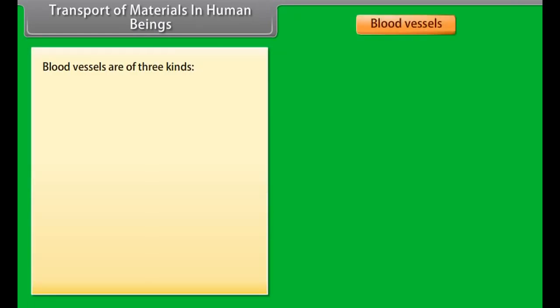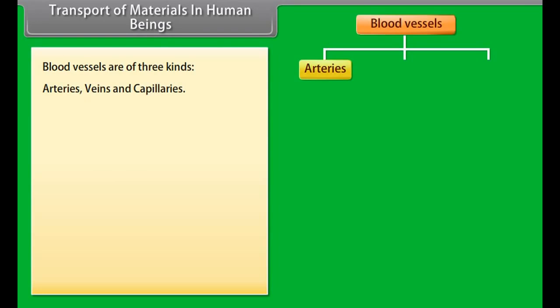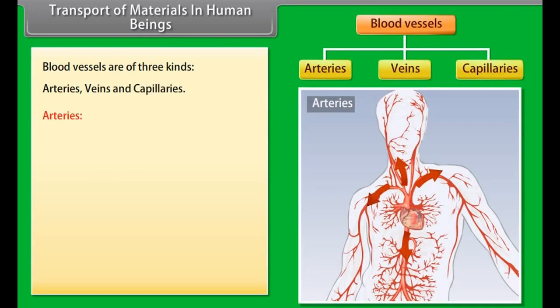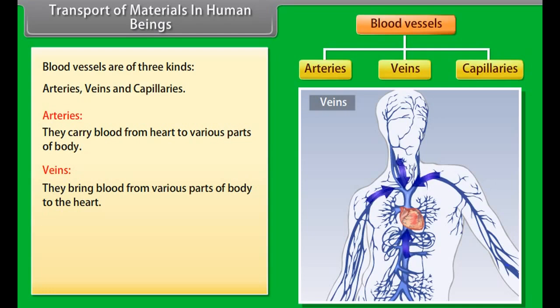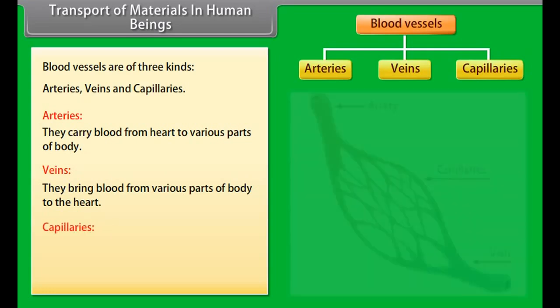Blood vessels are of three kinds: arteries, veins and capillaries. Arteries carry blood from the heart to various parts of the body. Veins bring blood from various parts of the body to the heart. Capillaries are thin vessels between the artery and the vein, and they allow the exchange of materials between blood and tissues.